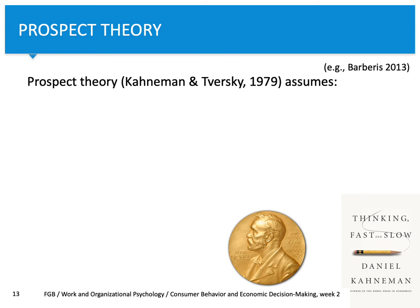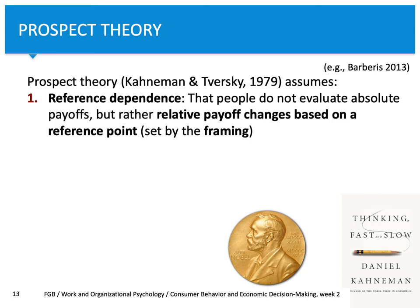Prospect theory assumes there are four major mechanisms that guide decision-making. The first and most important is reference dependence: people do not evaluate the absolute payoff of all possible consequences of their decisions. Instead, they evaluate relative payoff changes based on a reference point, and this reference point is set by framing.